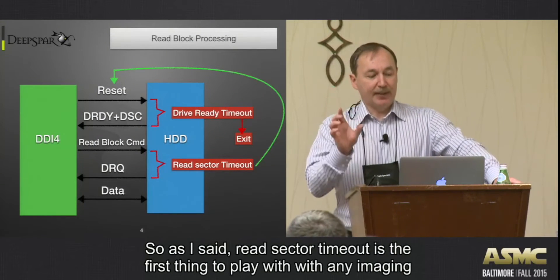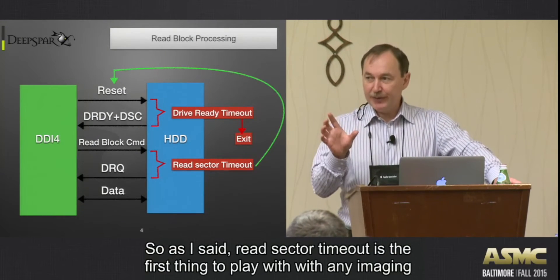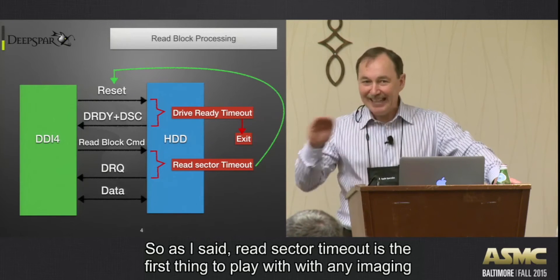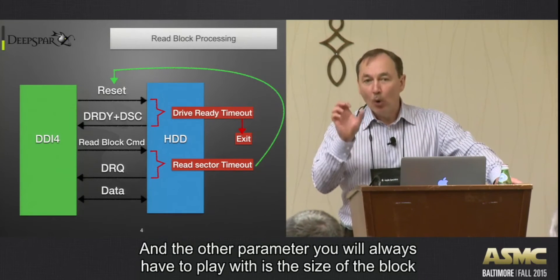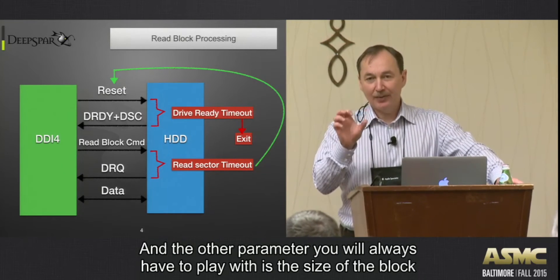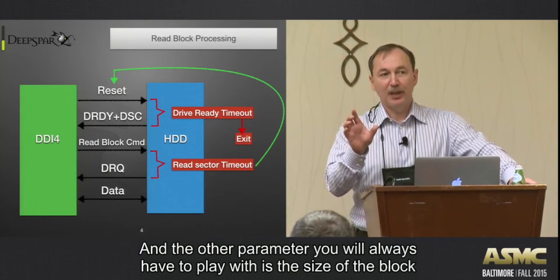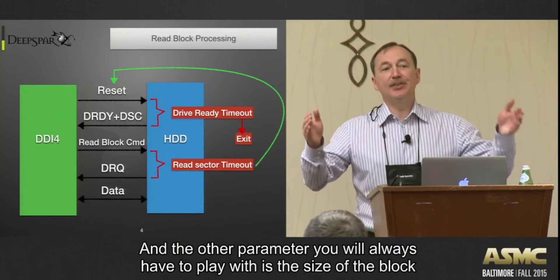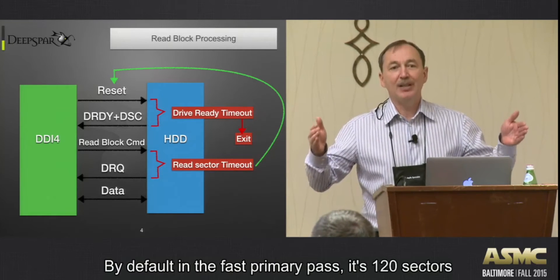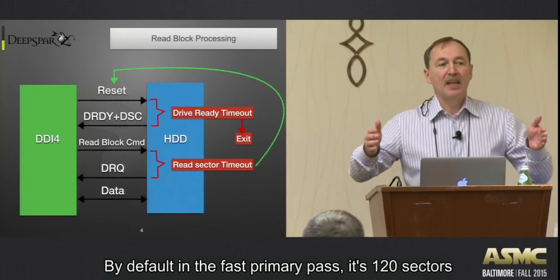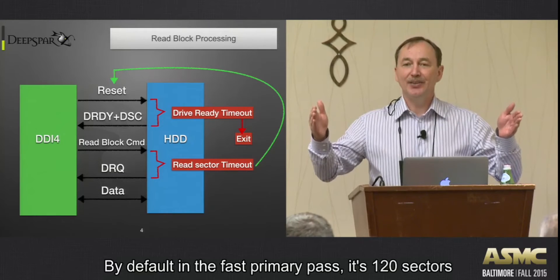As I said, read sector timeout is the first thing to play with with any imaging. And the other parameter that you will always have to play with — that is not an option, you always have to play with — is the size of the block. It's a block size. By default in fast primary parse, it's 120 sectors.